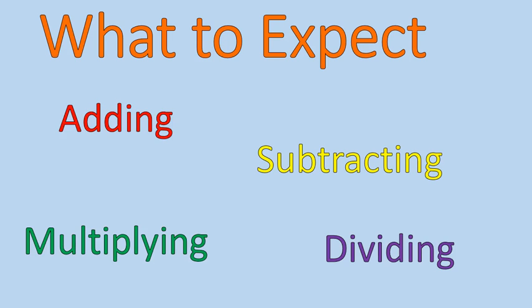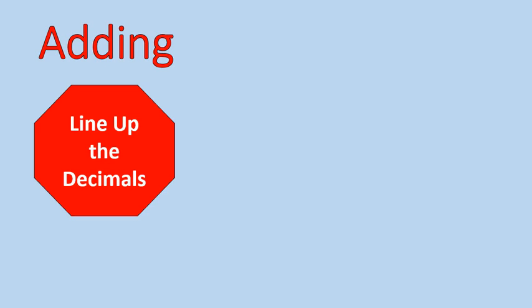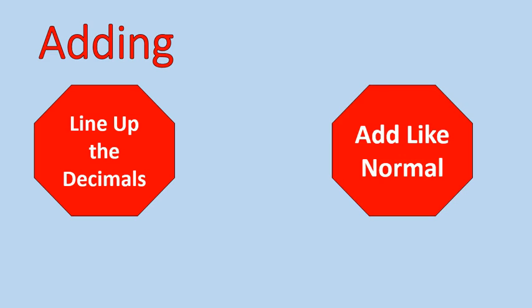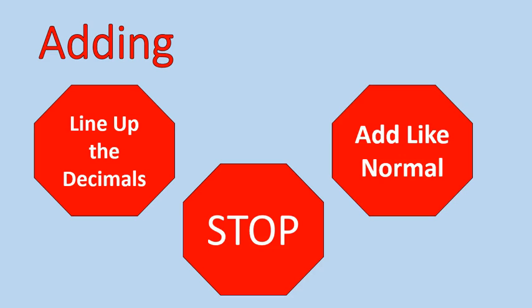We are going to do those four basic operations. Start with adding. When you're trying to add numbers with decimals, you line up the decimals, add like normal, and then stop. I just needed to put a stop because it's like a stop. It's a nice octagon.